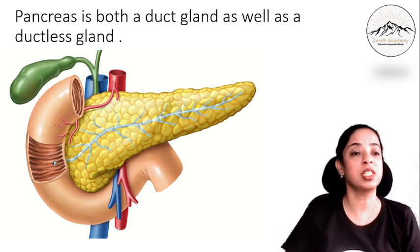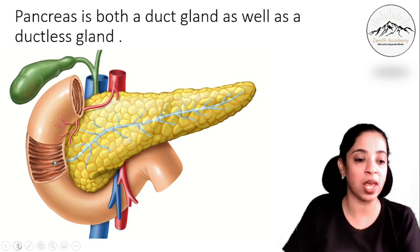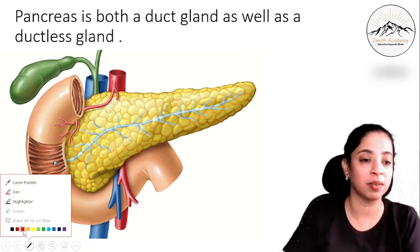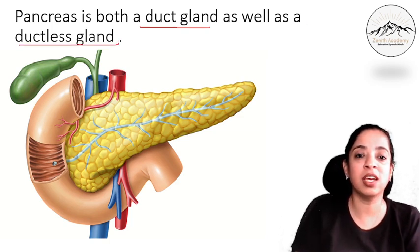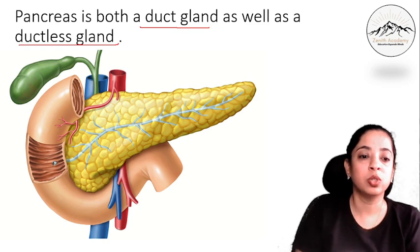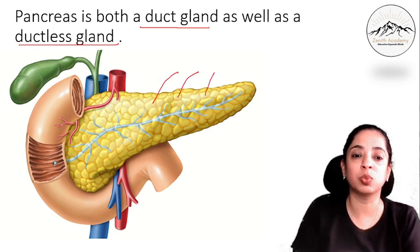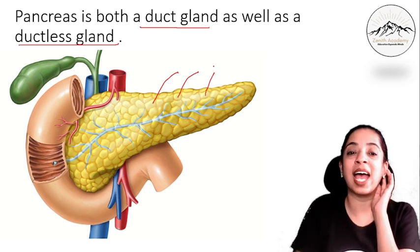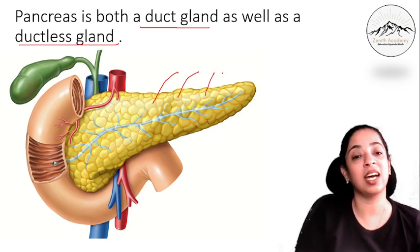Pancreas is both a duct gland as well as a ductless gland. You can see here a blue colored duct pouring its secretion into the duodenum — so it has a duct. And you can see these small yellow departments; these are called islets of Langerhans, and they are a ductless gland.